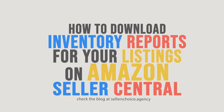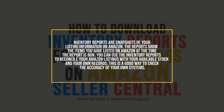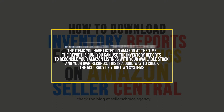If your brand is selling on Amazon, you know how important understanding and tracking your inventory is. Inventory reports are snapshots of your listing information on Amazon. The reports show the items you have listed on Amazon at the time the report is run. You can use the inventory reports to reconcile your Amazon listings with your available stock and your own records. This is a good way to check the accuracy of your own systems.